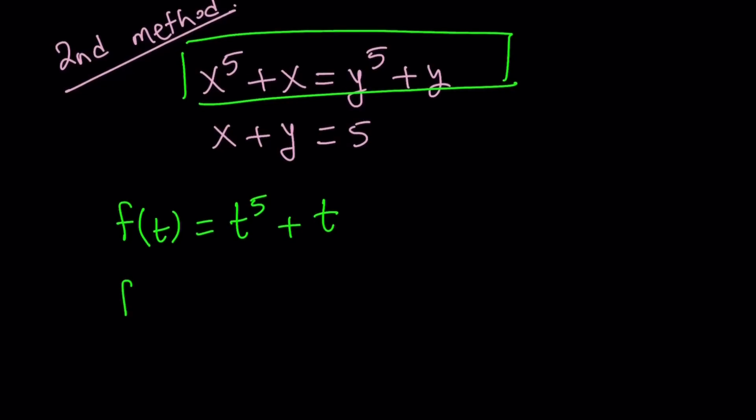Let's look at the derivative: 5t to the 4th plus 1. And as you know, t to the 4th for real values of t is always going to be greater or equal to 0. So this is always positive, which indicates f is always increasing.